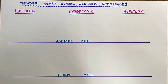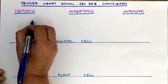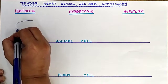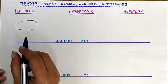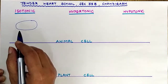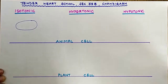Now let us see what happens to an animal cell when kept in isotonic solution. An animal cell is shown with a round figure. When an animal cell is kept in an isotonic solution, you can see there is no change in the cell size and shape. This is because there is no net movement of water molecules across the cell membrane.